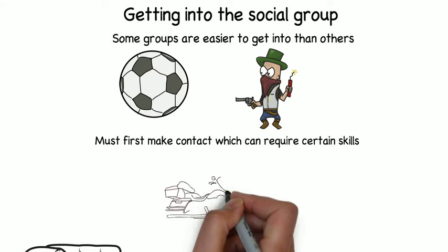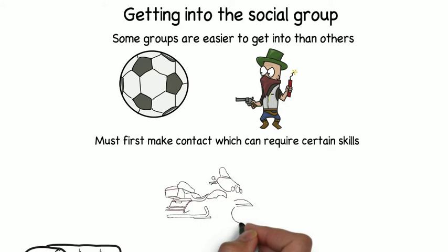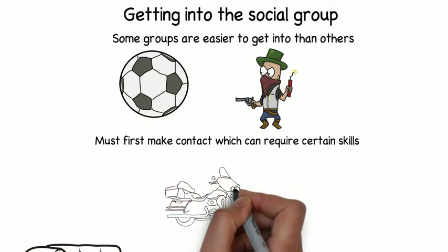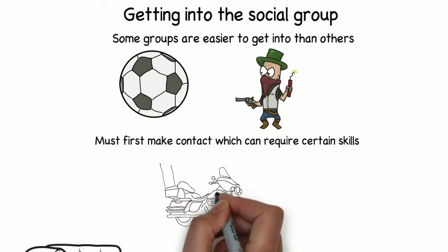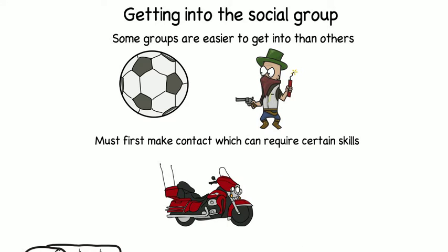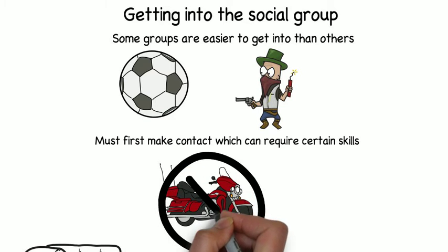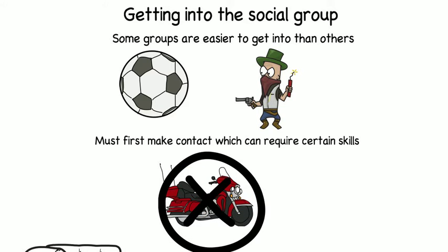For example, imagine you would like to study a motorcycle gang but you yourself cannot ride a motorcycle. That initial contact will not go well and you will be rejected from the group.